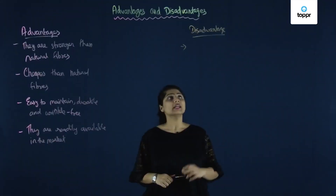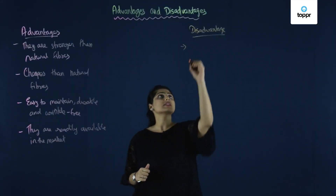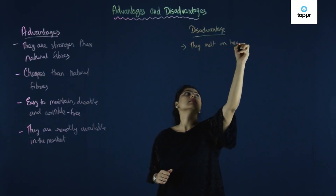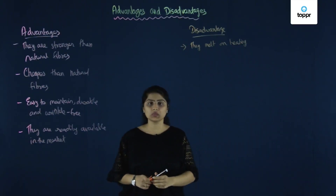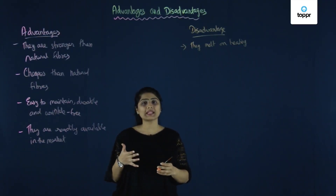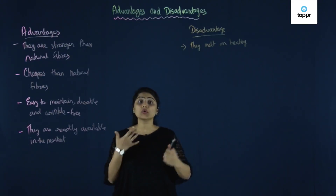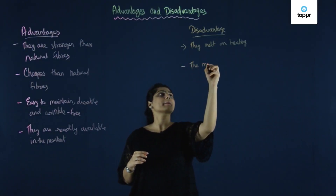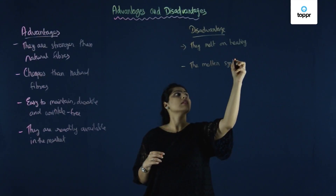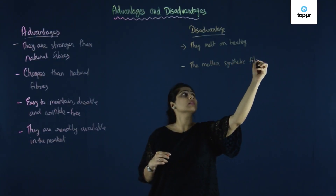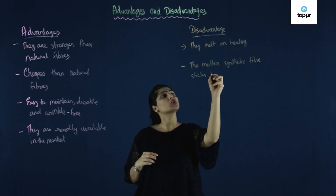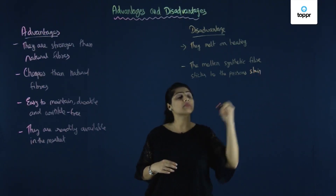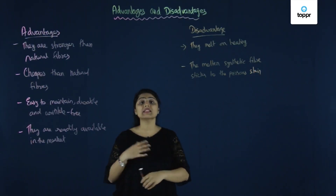Now let's see the disadvantage. The biggest disadvantage in using synthetic fibers is that they melt on heating. You must have seen that usually your moms do not wear synthetic fibers when working in the kitchen because there is a lot of heat there. These synthetic fibers start melting, and the molten synthetic fiber sticks to the person's skin, which is not really good.